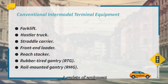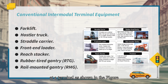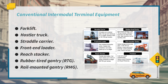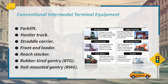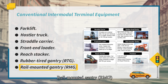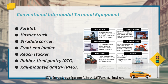A variety of equipment can be used to perform intermodal operations at a terminal, as shown in the figure. The choice of equipment is related to a number of factors including capital investment, volume, stacking density, and productivity. The main types of equipment include: forklift, straddle truck, straddle carrier, front-end loader, reach stacker, rubber-tyre gantry (RTG), and rail-mounted gantry (RMG). Different equipment types have different features.